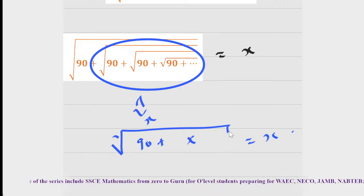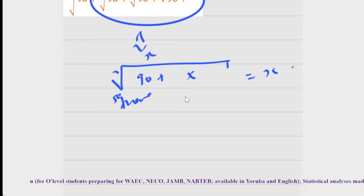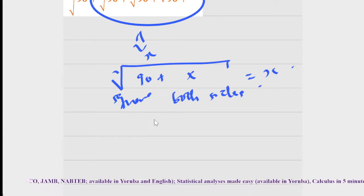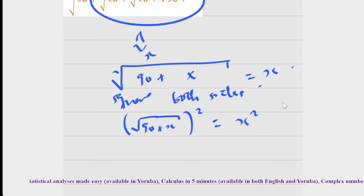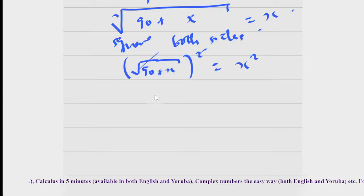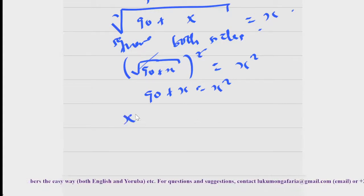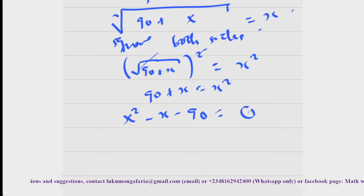From here, I can just square both sides to get rid of this radical. Squaring both sides gives: (√(90 + x))² = x², so the square cancels the radical and I have 90 plus x equals x squared. We now have a quadratic equation. Rewriting it: x² minus x minus 90 equals zero.